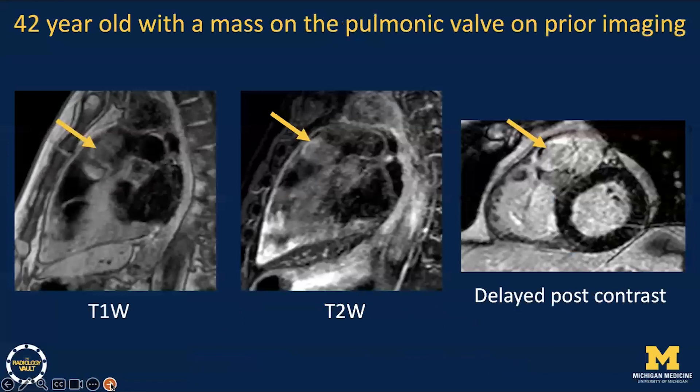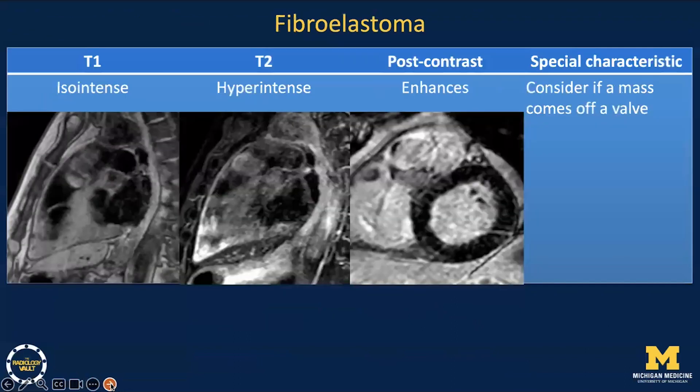This is a 42-year-old found to have a mass on the pulmonic valve. Fibroelastomas are a primary consideration for a mass that arises on a valve. These are typically small in size, and reported imaging findings on MR include T1 isointensity, T2 hyperintensity, and enhancement post-contrast. Again, location is key to considering this diagnosis.